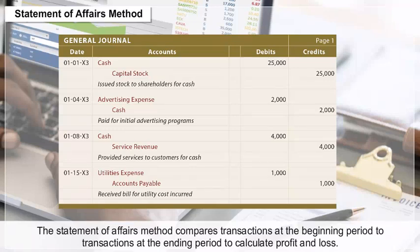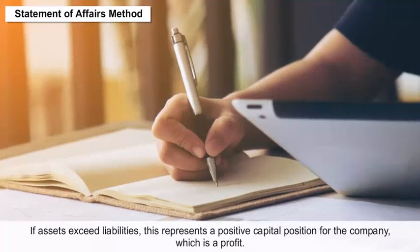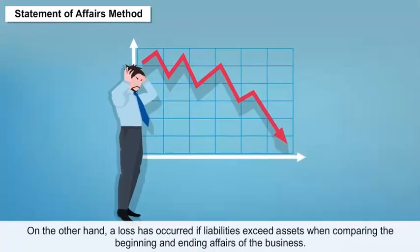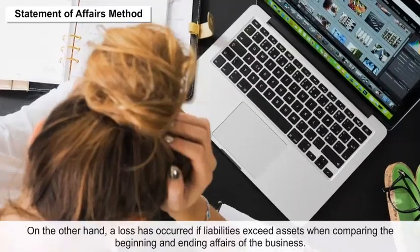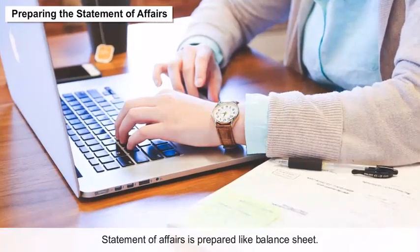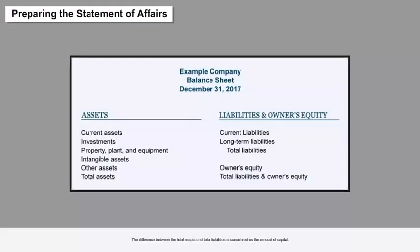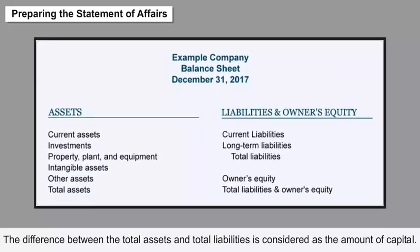The statement of affairs method compares transactions at the beginning period to transactions at the ending period to calculate profit and loss. If assets exceed liabilities, this represents a positive capital position — a profit. On the other hand, a loss has occurred if liabilities exceed assets when comparing the beginning and ending affairs of the business. The statement of affairs is prepared like a balance sheet, with all liabilities on the left-hand side and all assets on the right-hand side.